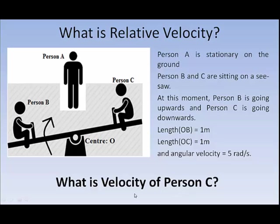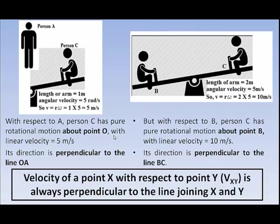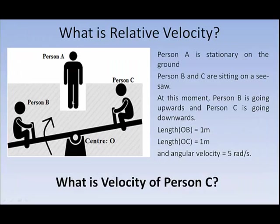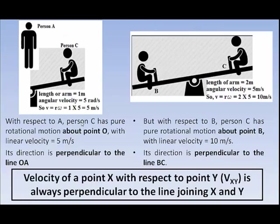If I ask what is the velocity of person C, the answer will depend on the observer. If we ask person A — he is on the ground and the length of the seesaw is 1 meter, angular velocity is 5 radians per second — by the formula V = Rω, the velocity will be 1 × 5 = 5 meters per second. This velocity will be perpendicular to the seesaw in the downward direction. So person A will say that person C is moving with a velocity of 5 meters per second.